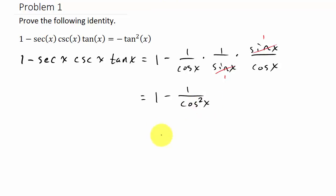This gives me one minus secant squared x. Let's see what we can do with this.